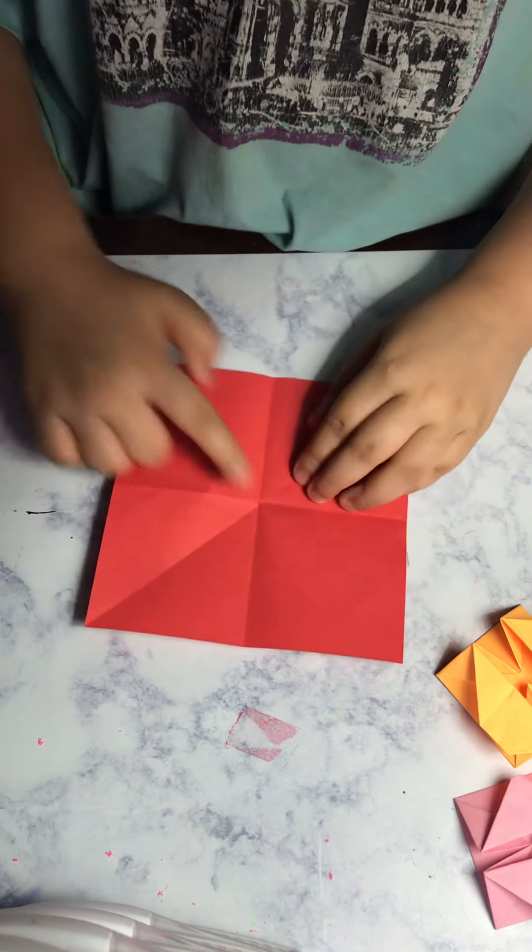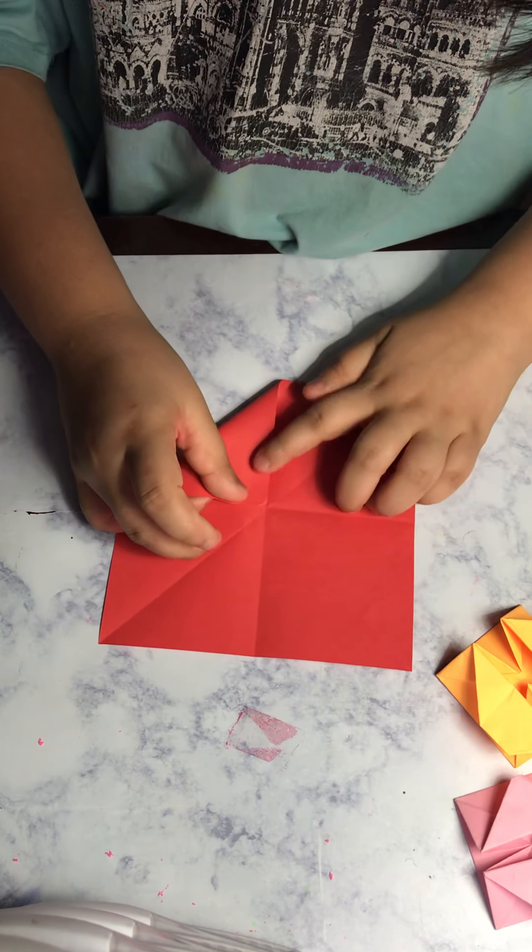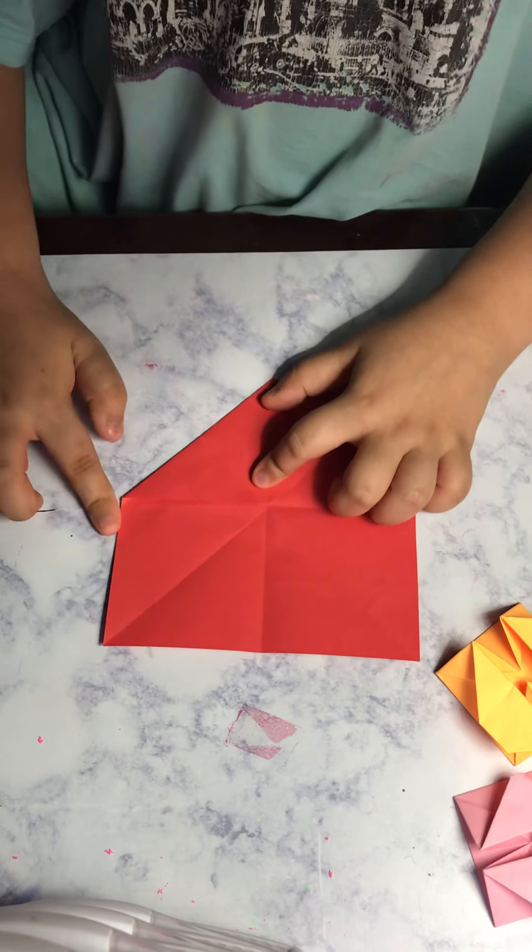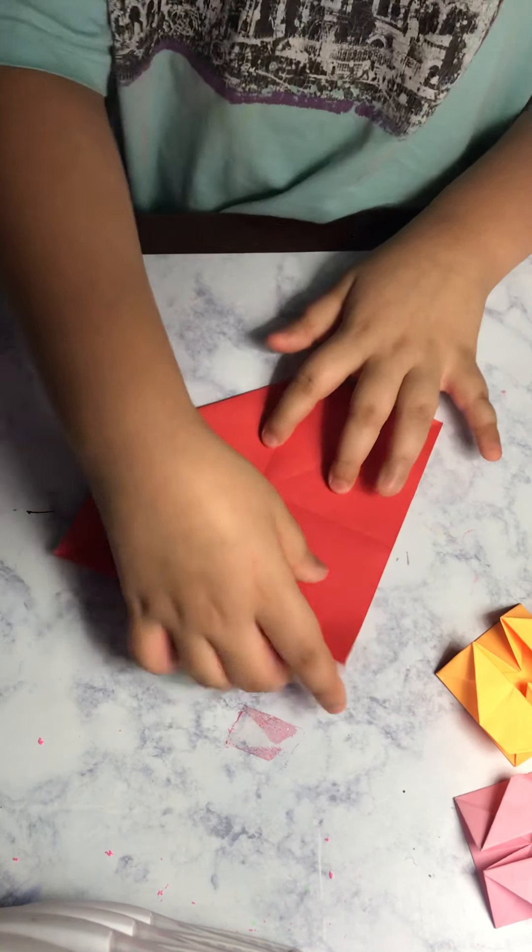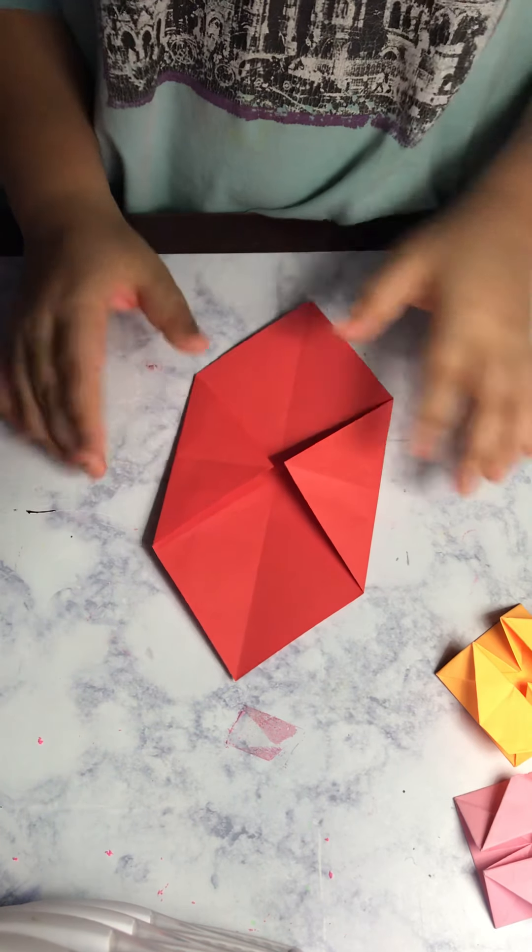Now the two creases you made right over here, you fold the tip to the middle. Then you fold the other tip to the middle on the opposite side to make this.